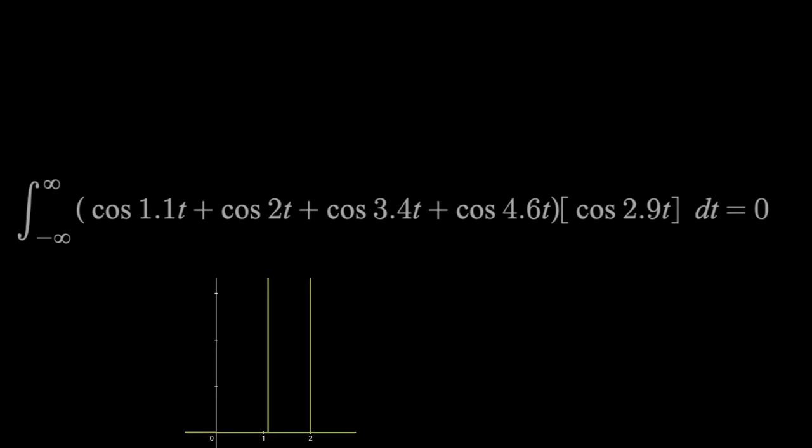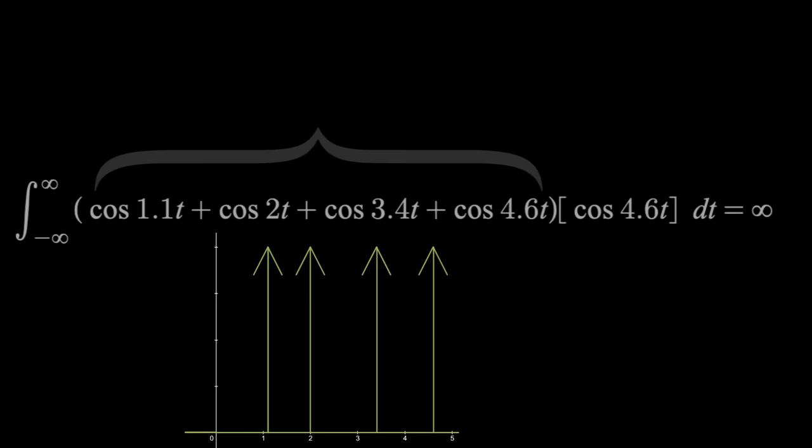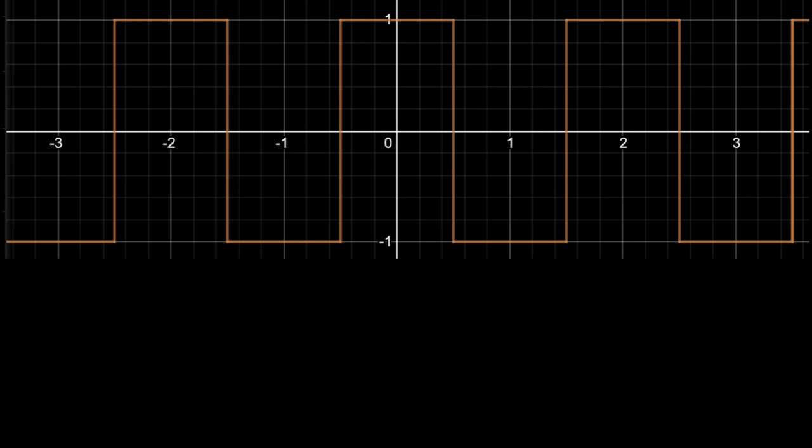Now of course it's easy to see what sinusoids make this up. I mean, they're right there. But if I gave you a square wave for example, then it's not remotely as obvious. However, with our scanner, we'll figure it out.